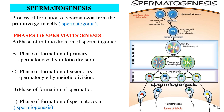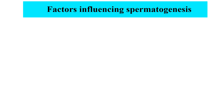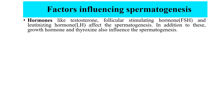The last phase is spermiogenesis — the phase of formation of spermatozoa. The spermatids do not divide further but undergo morphological changes to form sperms or spermatozoa. The spermatid undergoes changes in the shape and orientation of its organelles, and spermatids mature into spermatozoa in the folds of the cytoplasm of the Sertoli cells. Factors influencing spermatogenesis include hormones like testosterone, FSH, and LH. In addition, growth hormone and thyroxine also influence spermatogenesis.